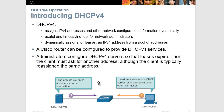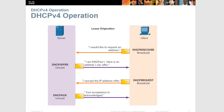Here we have the DHCP process — how your client gets its IP address through DHCP. The client boots up with no IP address and is set to use DHCP. It sends a broadcast out with its MAC address as the source MAC address, since it has no IP address. That's how the server knows how to respond to the Discover message.